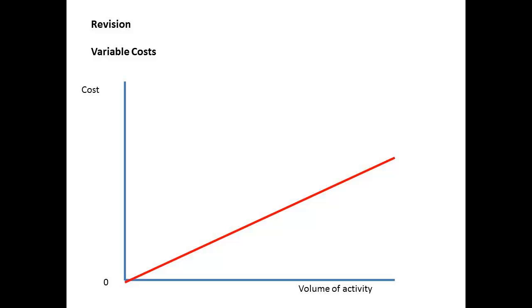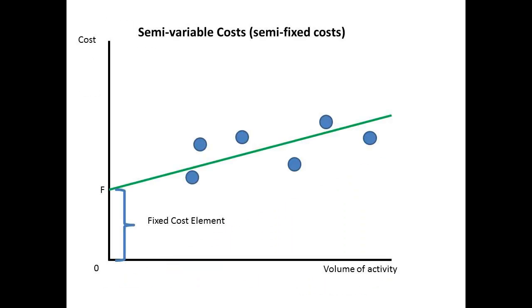In contrast, our variable costs were represented by a slope which passes through the origin. Here is our second aside.